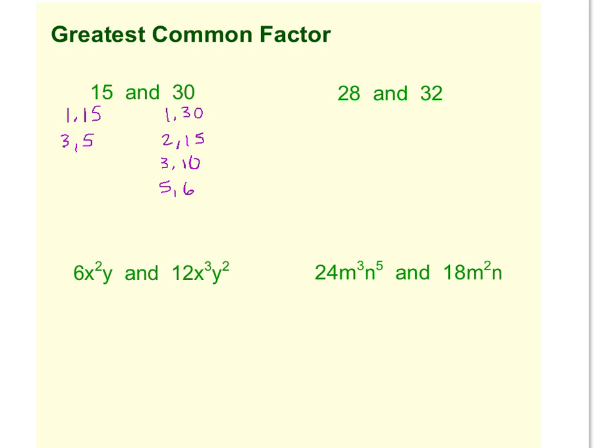So the common factors, well these two have a few common factors. 1 is a common factor, 3 is a common factor, and 5, and 15. So when we want the greatest common factor, well we've got 4 common factors. The greatest one is going to be the biggest number that fits into both 15 and 30, and in this case it's 15. So 15 is the greatest common factor between 15 and 30.